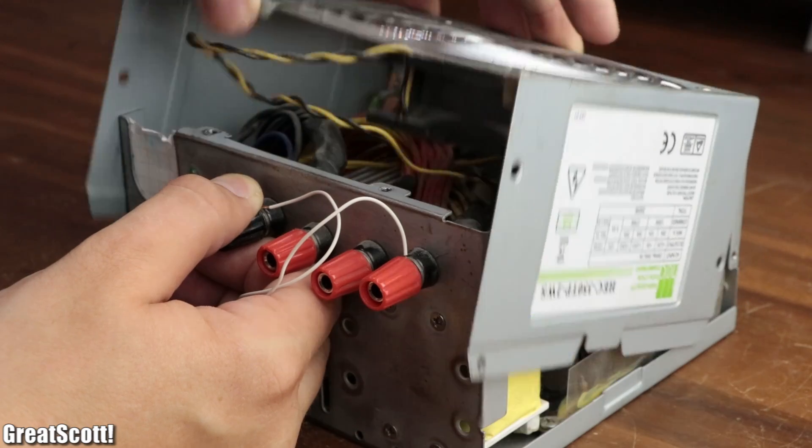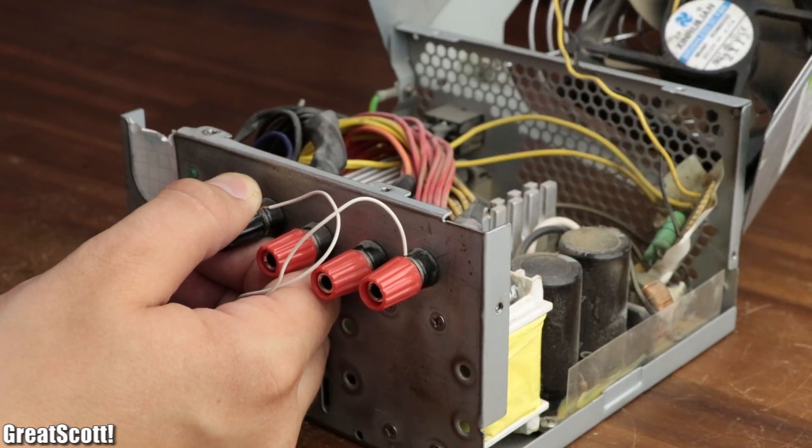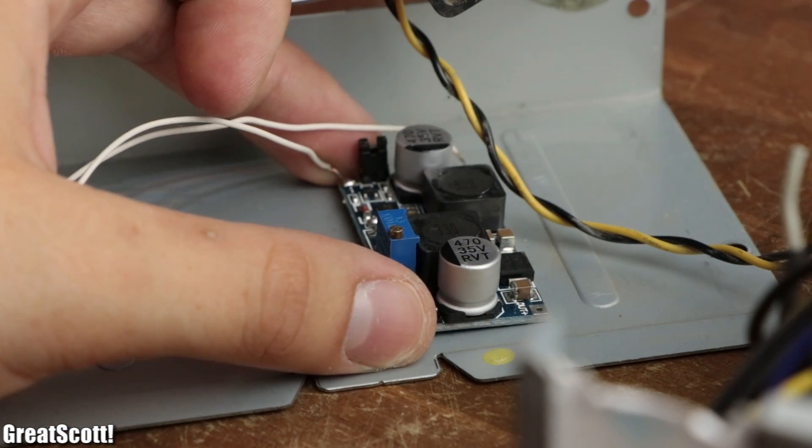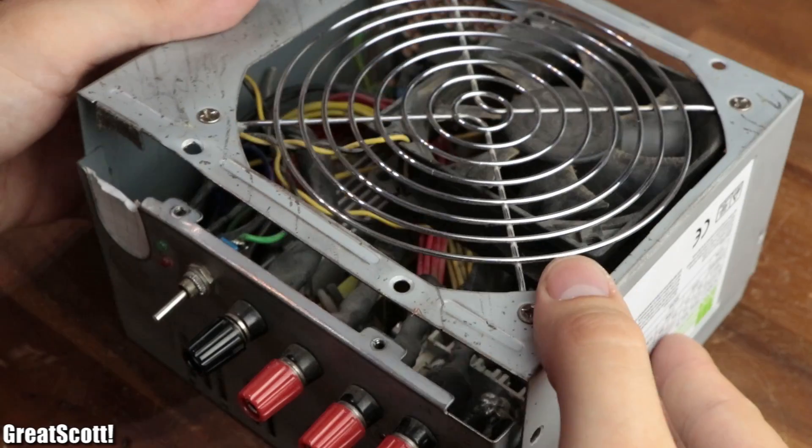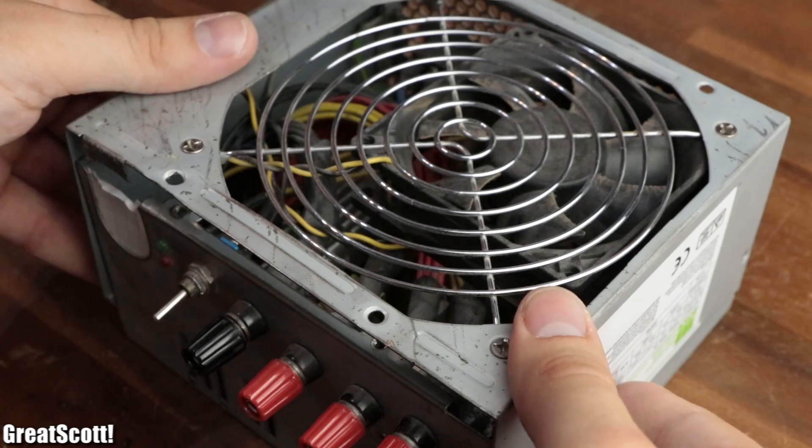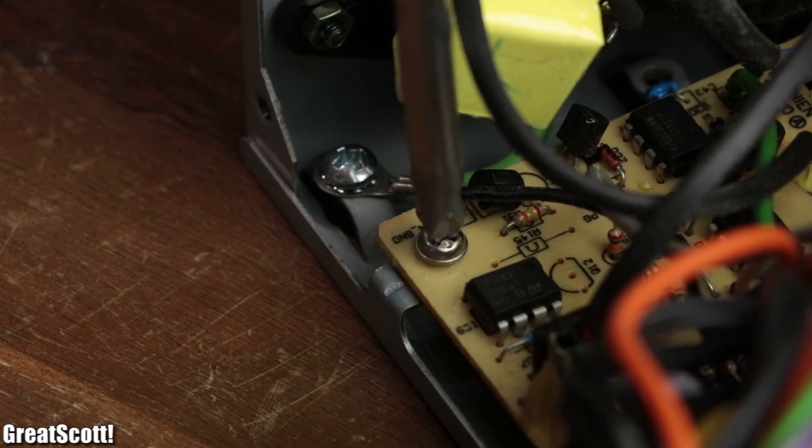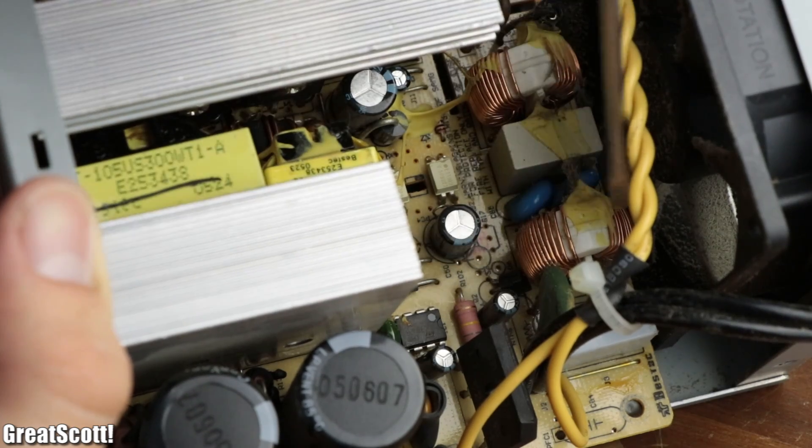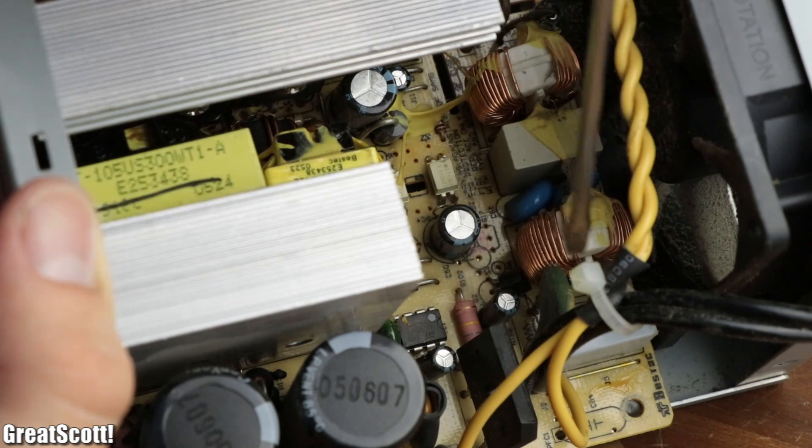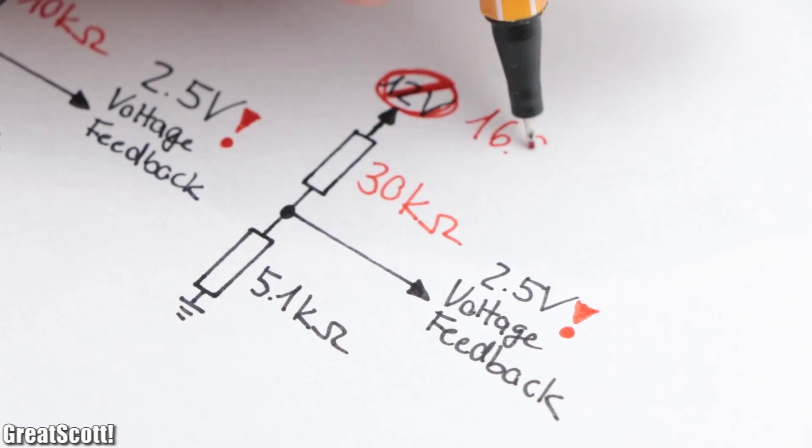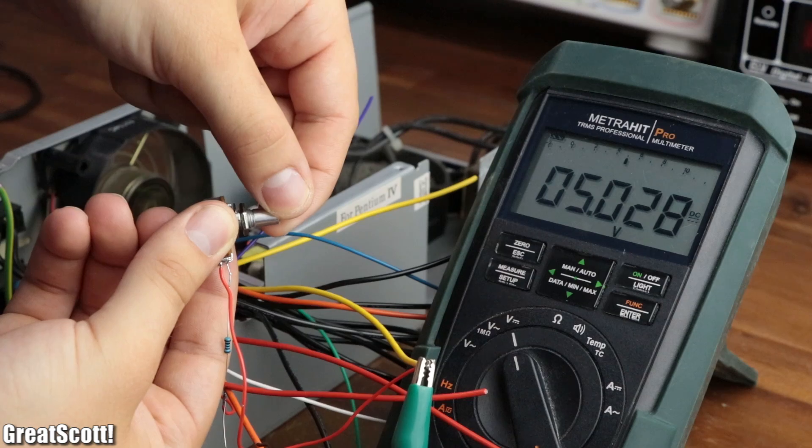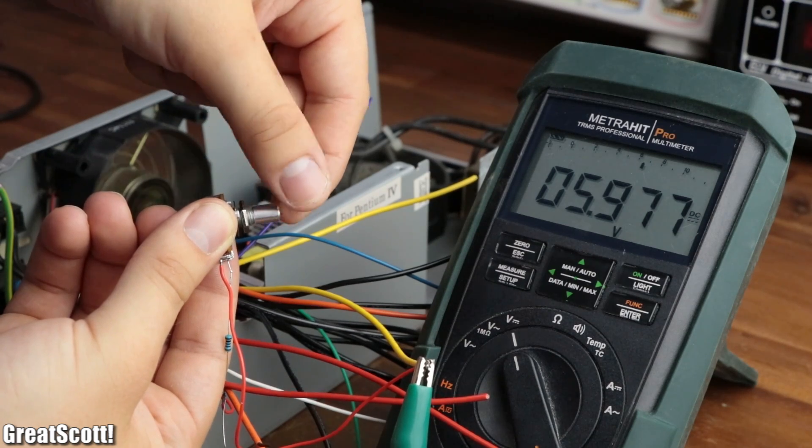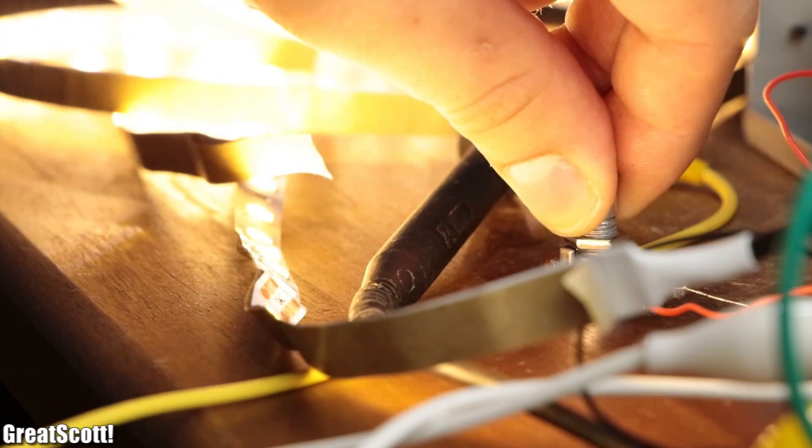Only problem is that the converter takes up non-existent additional space inside the supply housing. So there must be another solution to this problem. That is why in this video we will have a closer look at the circuit of such a switched mode power supply and find out whether it makes sense to modify it in order to achieve a variable output voltage as well. Let's get started!